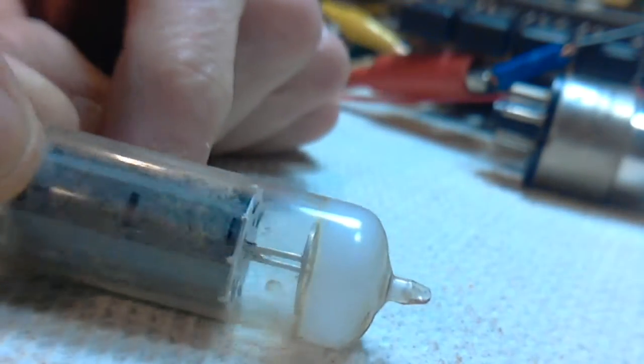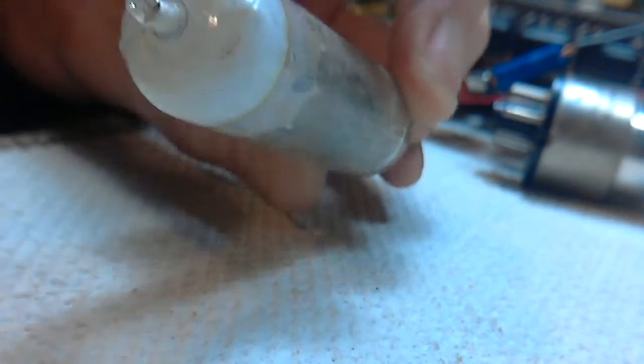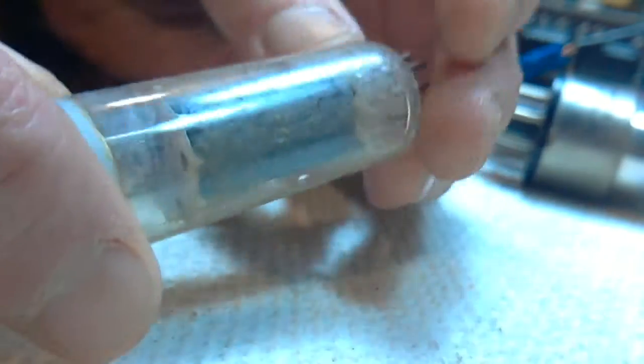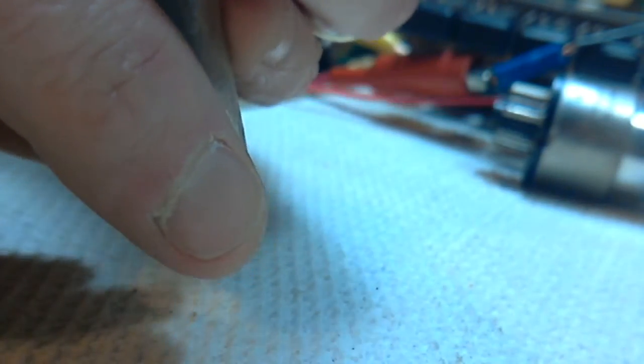So here's another tube. And again, you see the white on the top of it. I don't see what's happened, but something has happened. It's caused air to get into the tube.